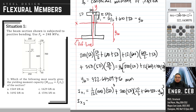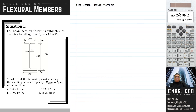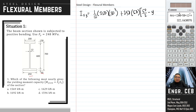For Ix₂, that is (1/12) times 12 times 600 cubed, plus area times the distance squared, where the distance is 600 over 2 plus 50, minus y_b, squared. For Ix₃, that is (1/12) times 250 times 50 cubed, plus area times the distance squared, where the distance is 50 over 2 minus y_b, squared. We solve each moment of inertia and then sum them.